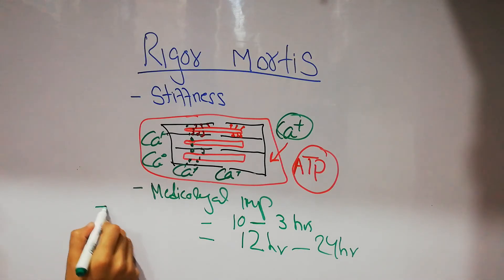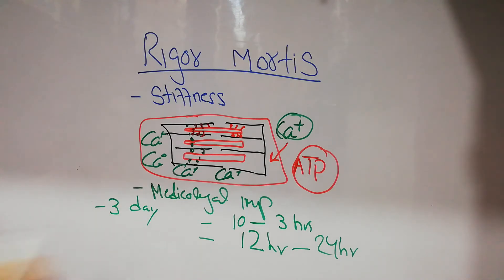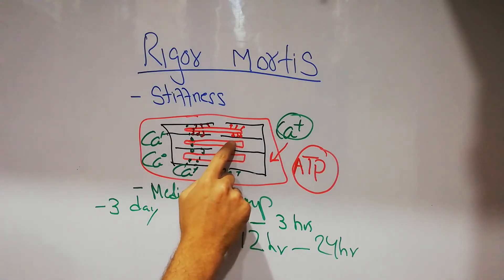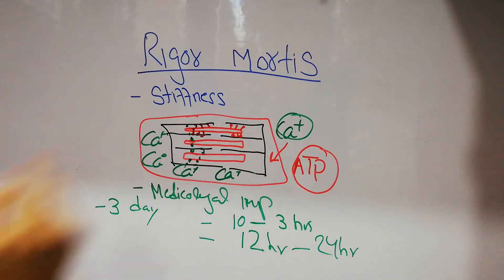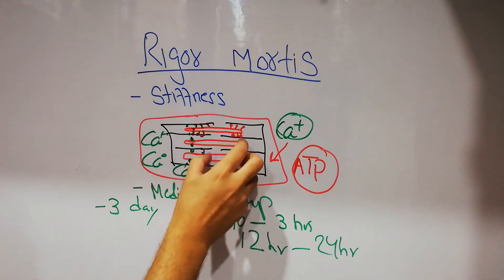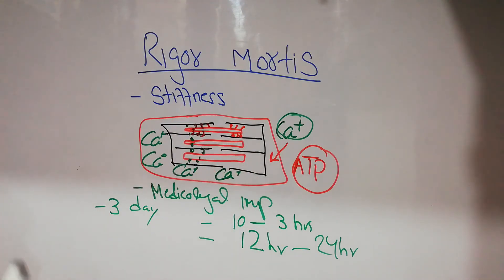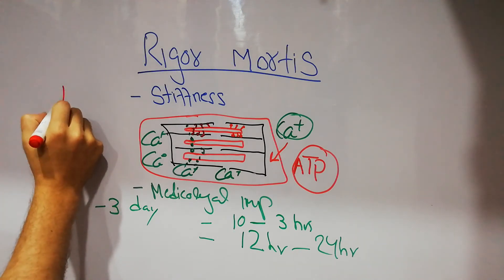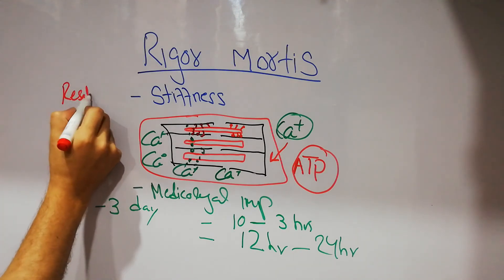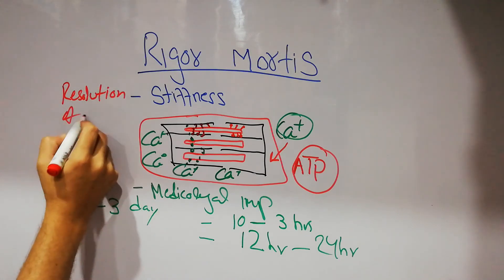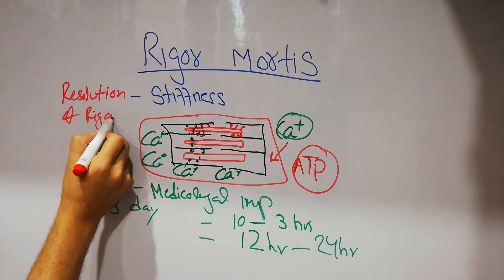Rigor mortis lasts for up to 3 days. After 3 days, a lot of enzymes are released and start destroying the actin and myosin proteins. These proteins are hydrolyzed. When the proteins have been hydrolyzed, the contraction is finished and the rigor mortis is completed. This is known as the resolution of rigor mortis.